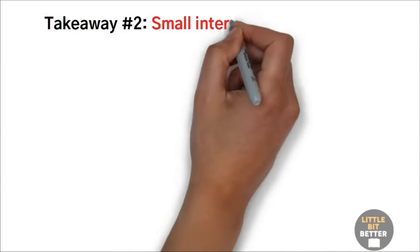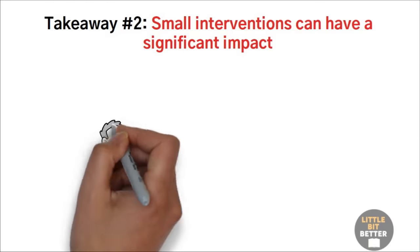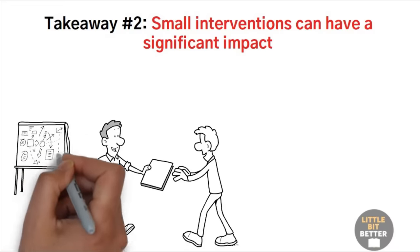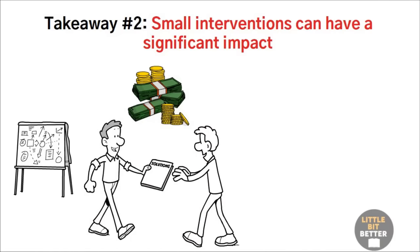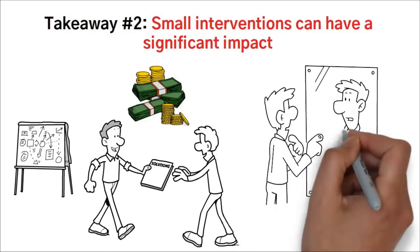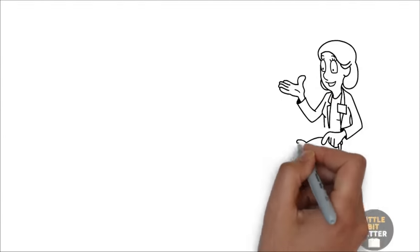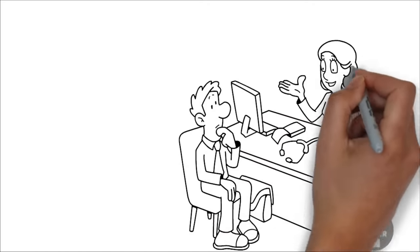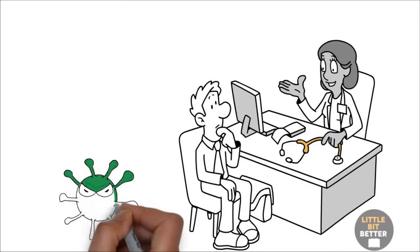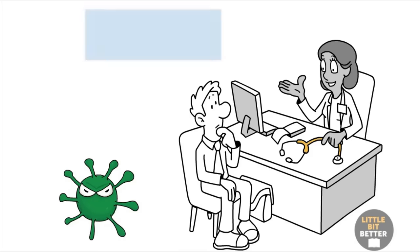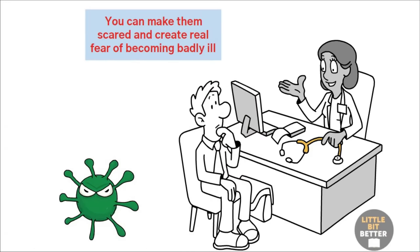Takeaway number 2: Small interventions can have a significant impact. We often assume that complex problems require complex solutions, but sometimes a small, seemingly trivial intervention can have a significant impact. For example, instead of spending a lot of money to make elevators faster, you can install mirrors. Mirrors keep you distracted and avoid boredom. Therefore, the ride seems faster than it actually is. Another example: Let's suppose you're a doctor and your patients have the terrible habit of abandoning antibiotic treatment as soon as their symptoms subside. The rational solution is to tell them about how dangerous that is, maybe with a small biology class explaining how bacteria can get stronger. You can make them scared and create real fear of becoming badly ill. Or you can find a much easier solution.